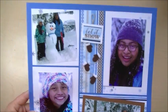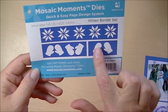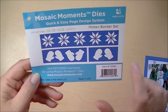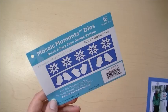These are actually a Mosaic Moments die. This die, which is actually intended to be a border set. This one covers three squares, this one four squares, this one two squares. But these can also pop out and become embellishments on your page.